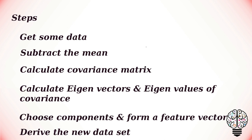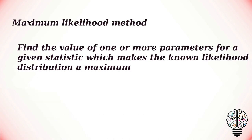Next we have to calculate the eigenvectors and eigenvalues of covariance. Next we have to choose components and form a feature vector. Finally we can derive the new data set. The next one is the maximum likelihood method, which is the procedure of finding the value of one or more parameters for a given statistic which makes the known likelihood distribution a maximum.